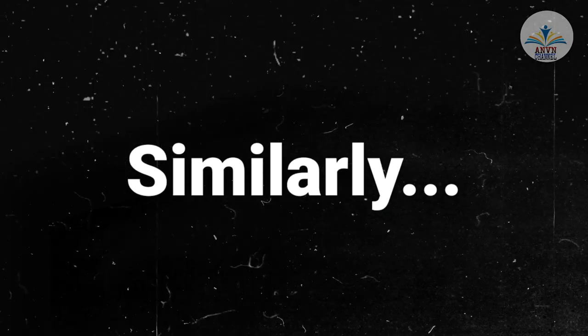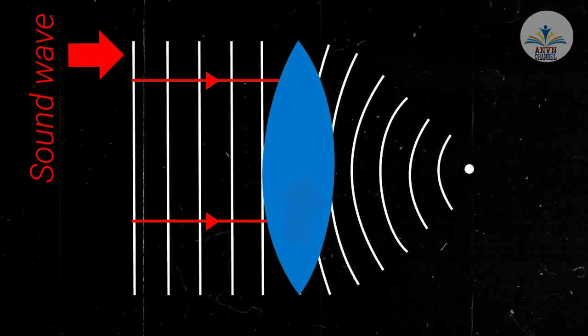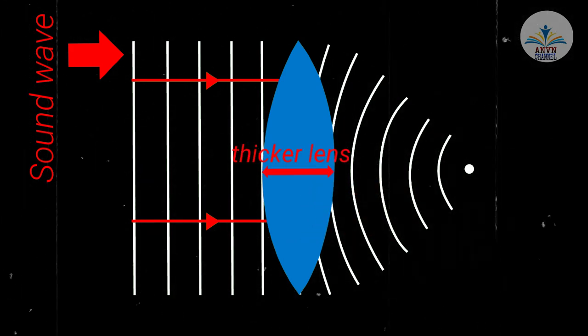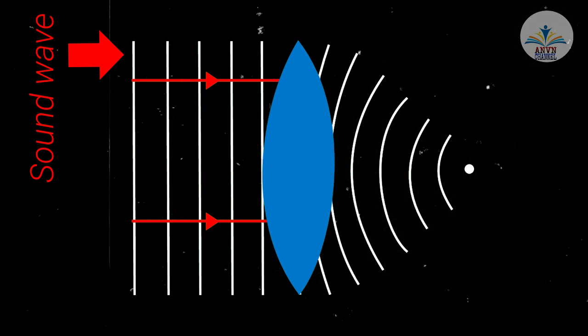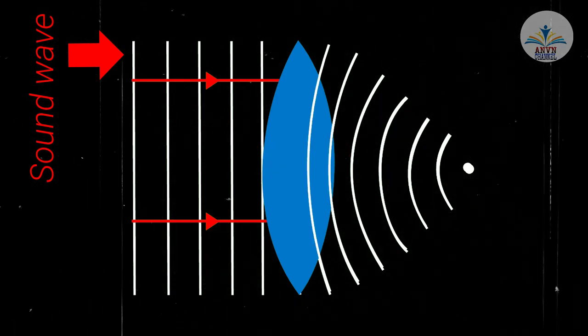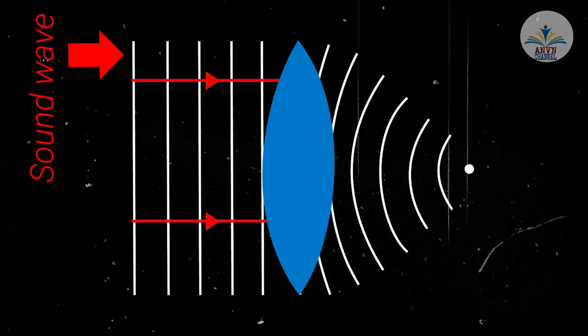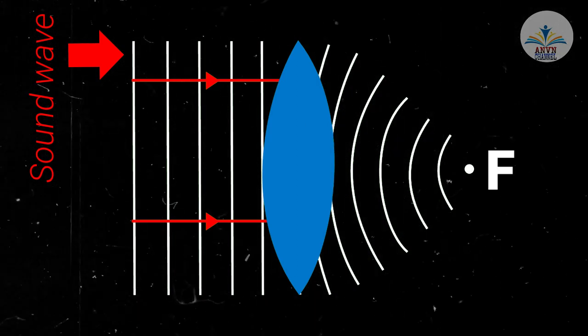Similarly, if we create a sound wave, the waves are slowed down in the middle of the lens where it is thicker. That's why in the middle of the lens, the delay is more than at the corners, creating a converging sound wave and forming the point F.